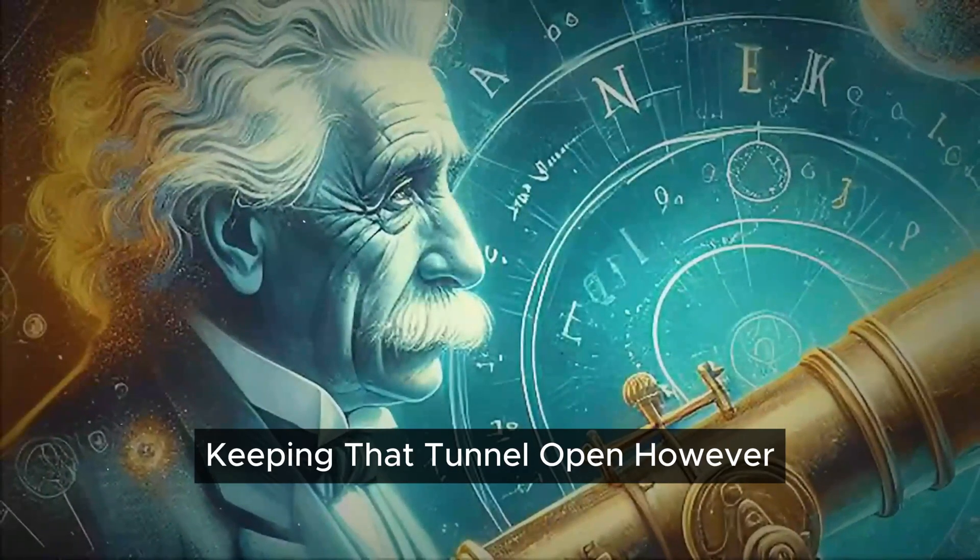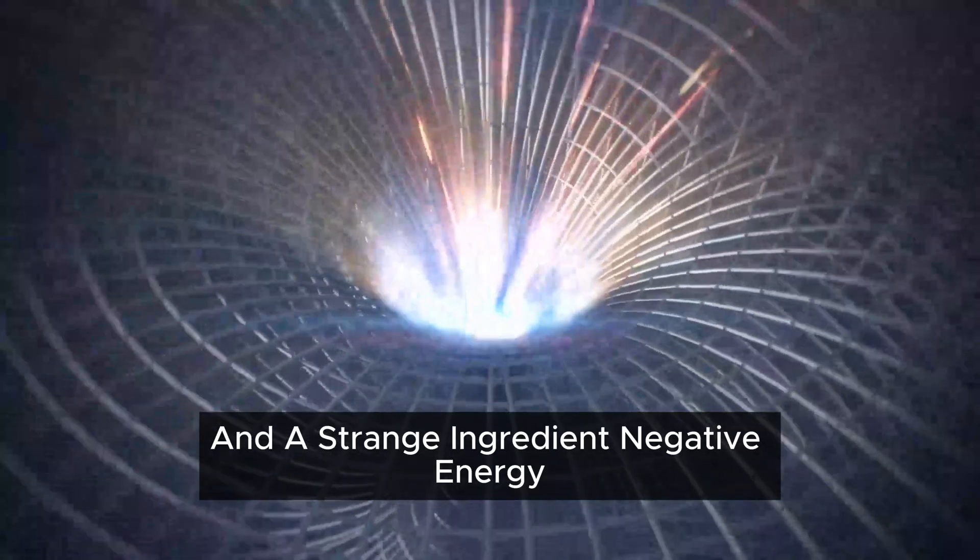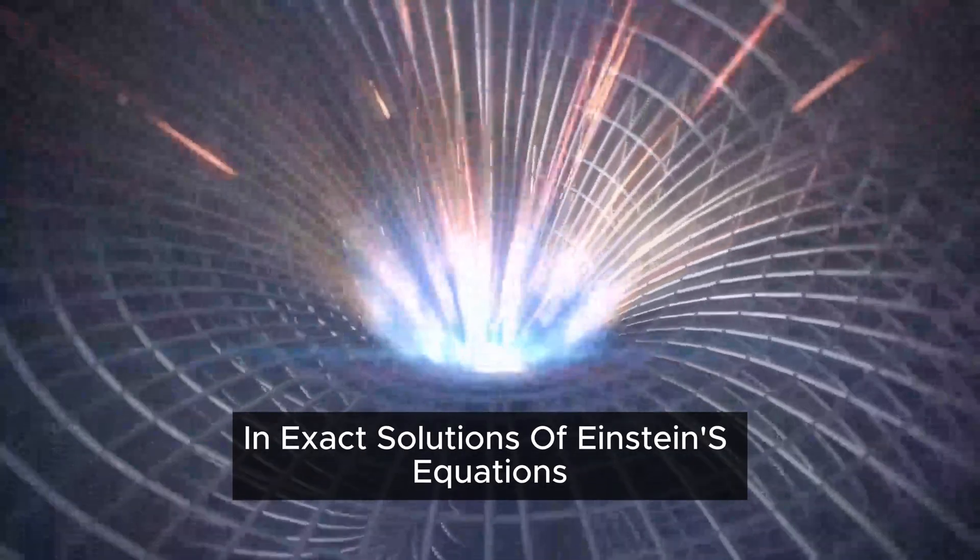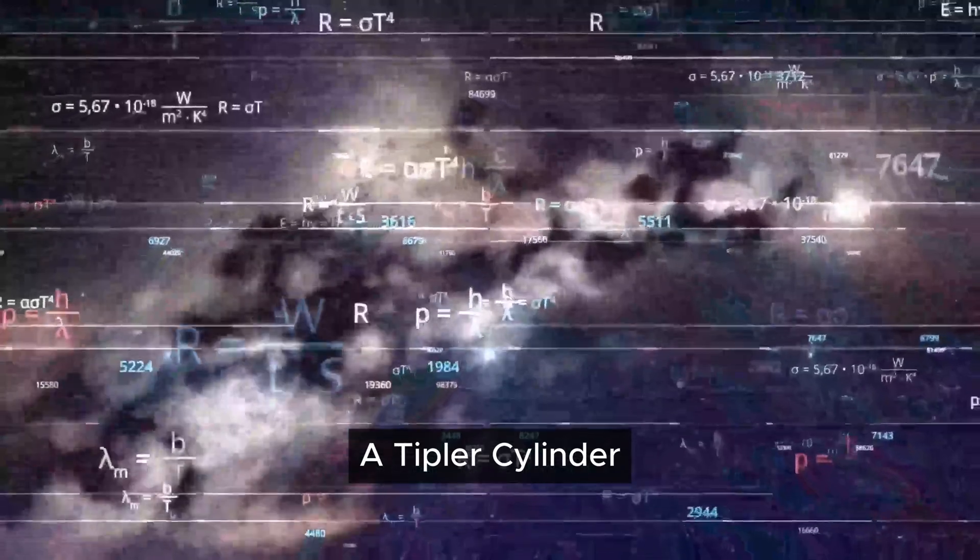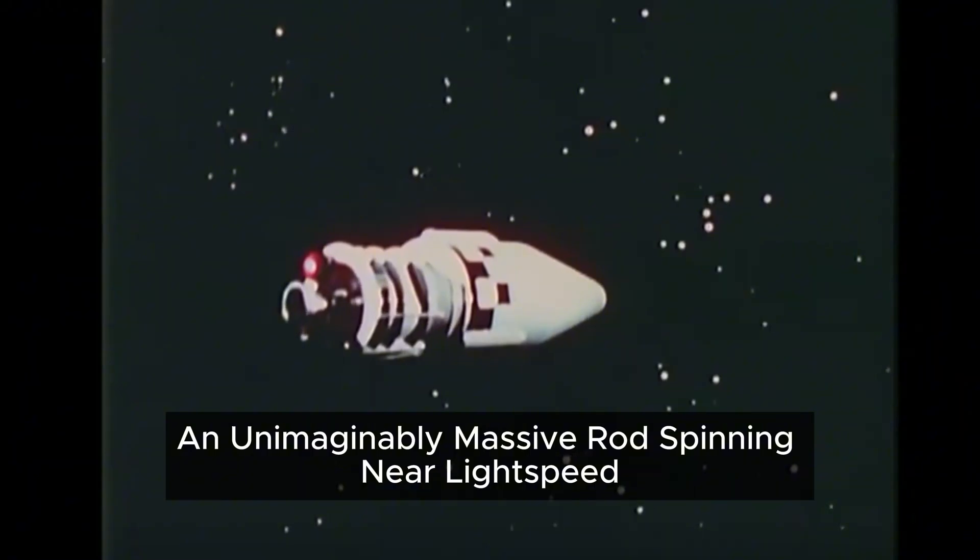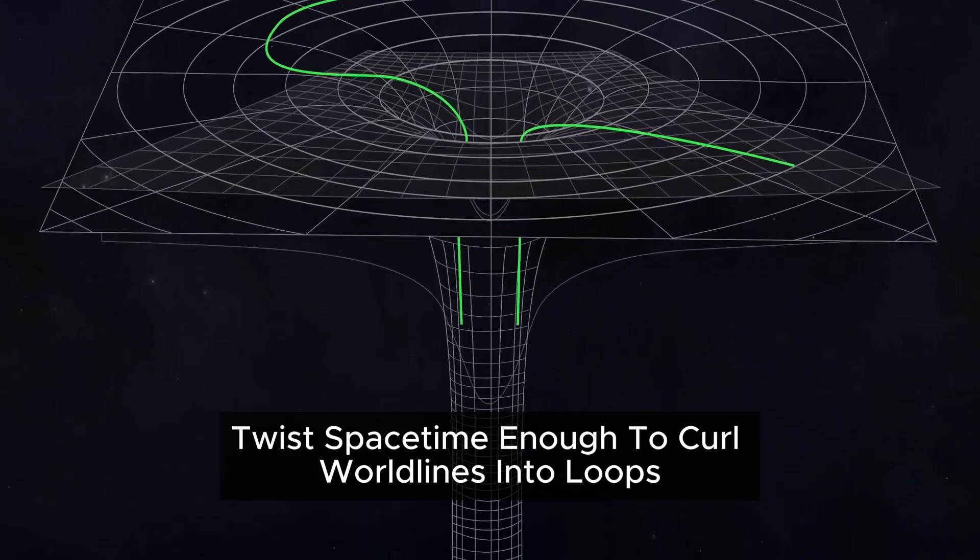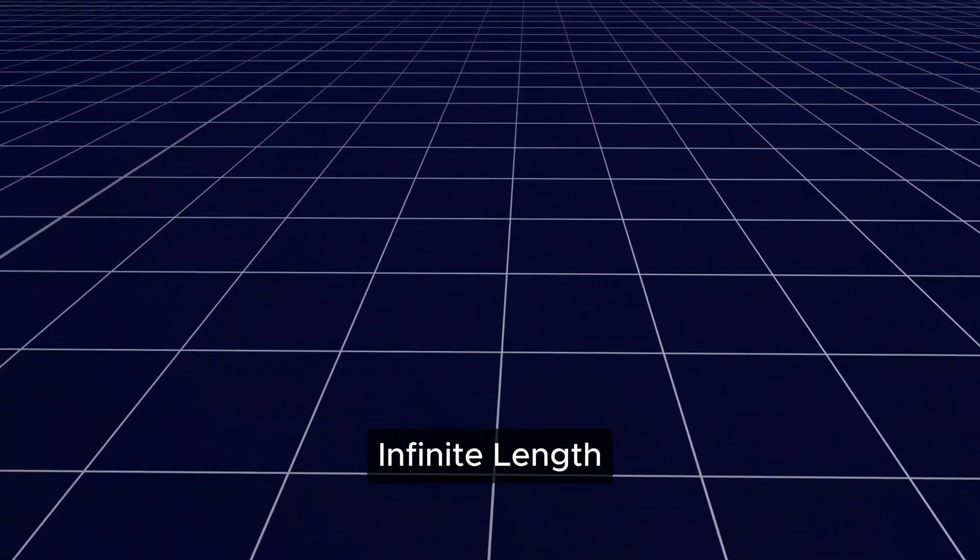Keeping that tunnel open, however, demands a strange ingredient: negative energy. Other blueprints appear in exact solutions of Einstein's equations. A Tipler cylinder, an unimaginably massive rod spinning near light speed, could in theory twist space-time enough to curl world lines into loops, though it seems to require a cylinder of effectively infinite length.